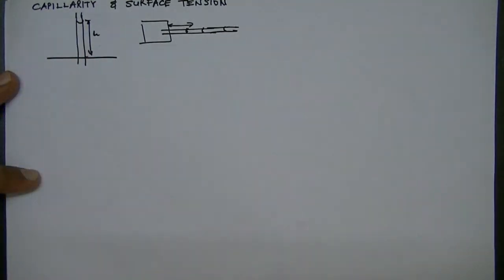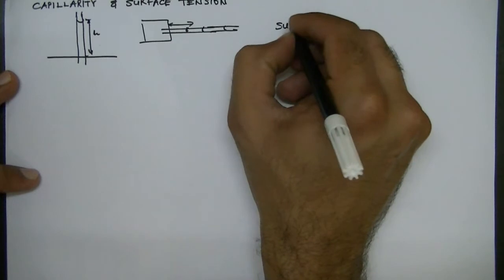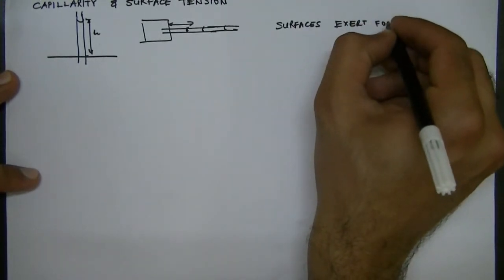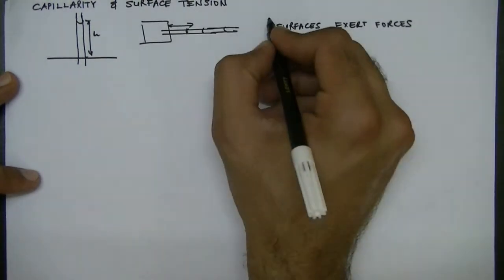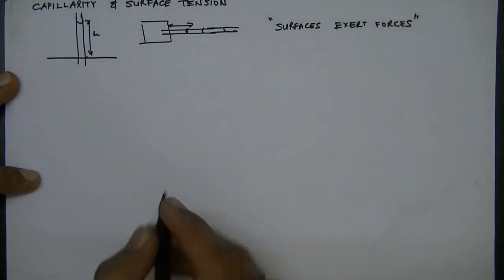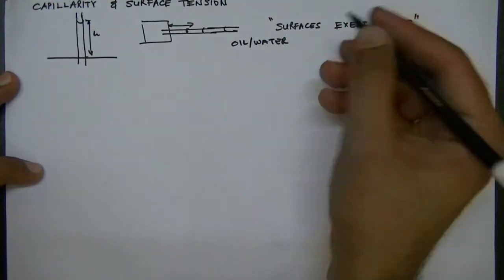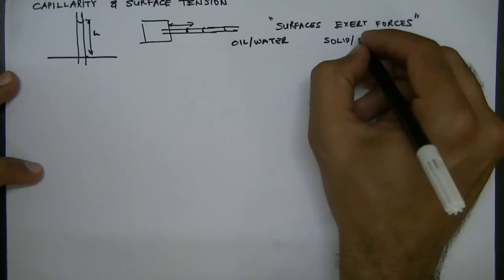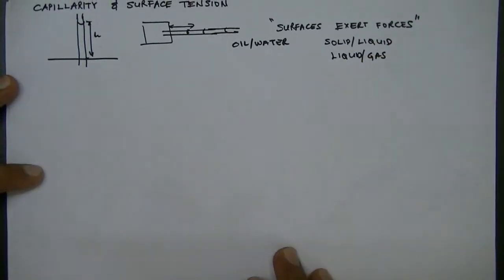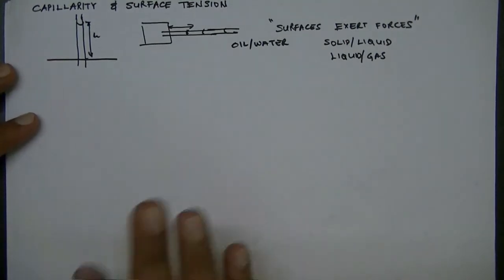To understand the phenomena of capillarity, the central idea is that surfaces exert forces. This surface can be a surface between oil and water — that is, a surface between two immiscible liquids — or it can be a surface between solid and liquid, liquid and gas, or even solid and gas.